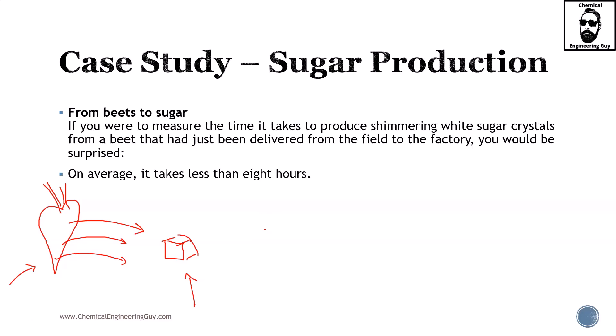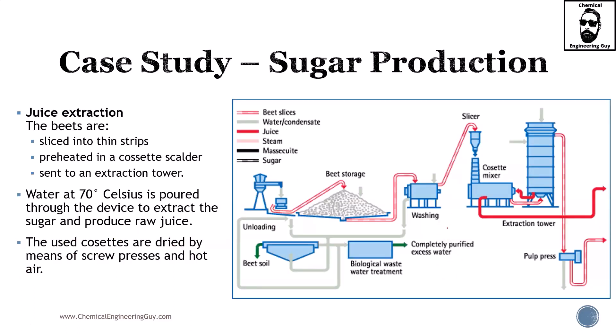Now you're probably wondering which types of unit operations we're going to be using. For instance, drying and evaporation are going to be included, maybe extraction — and of course we will be including crystallization. This is my first guess; try to make your own first guess about how we convert a beet into sugar crystals. Here is the quick diagram.